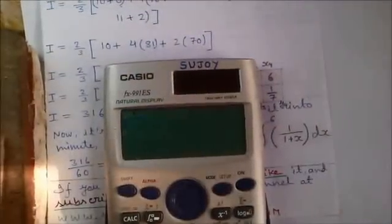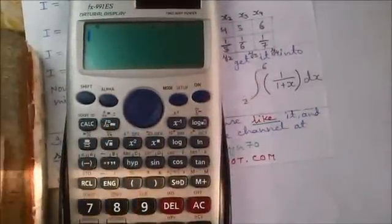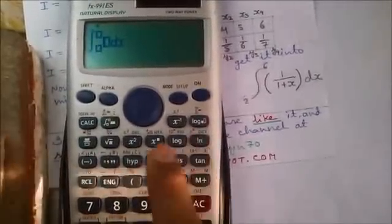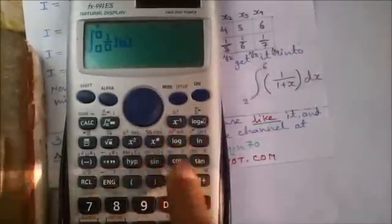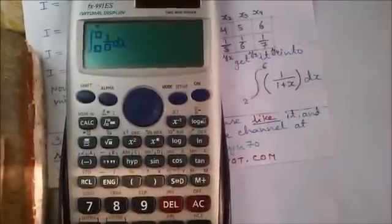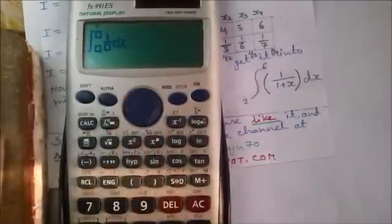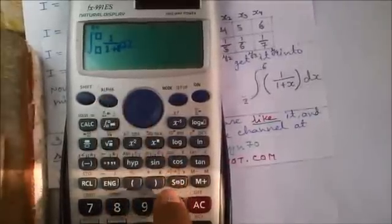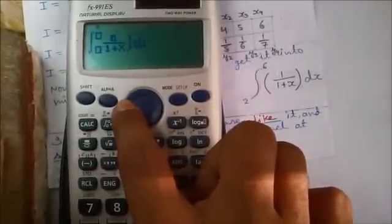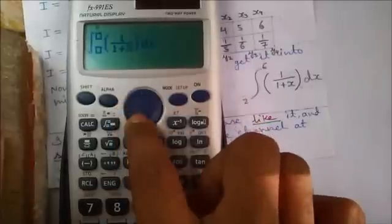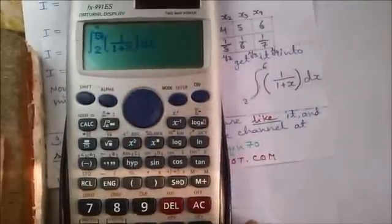Next I will show you how to find out the answer of this integration question without doing the math by your calculator. Press the integration button. Enter the expression. Press fraction: 1 divided by 1 plus x. For x press alpha and the right parenthesis. Enter the lower limit, that is 2. Enter the upper limit, that is 6, and press equals.